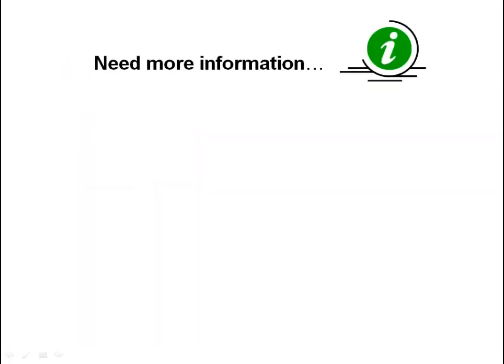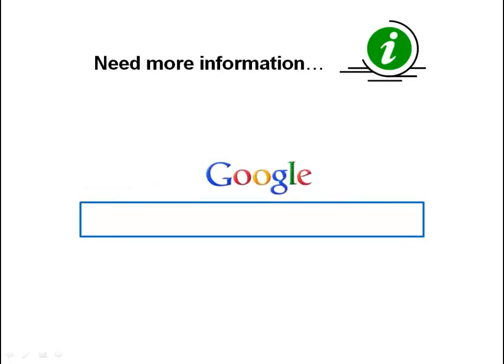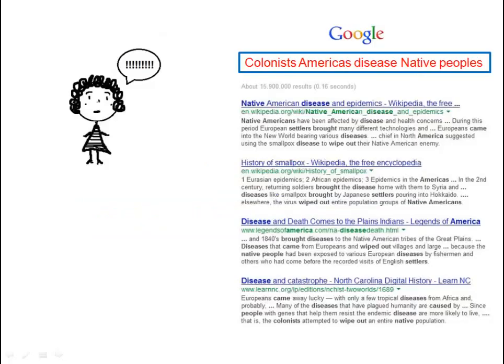Now you need more information. Am I correct in assuming you go to Google to begin your search? That's a good place to start. Type your search terms into the search box, and what do you get? Probably a lot of results. Most likely, near the top of your search list, there will be a very handy general article on your topic from Wikipedia.